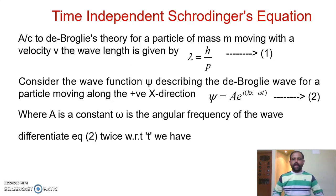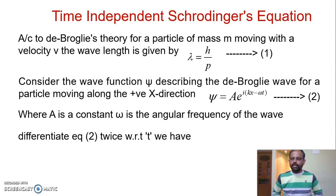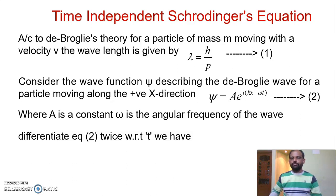Now we have to differentiate equation two with respect to time. Differentiating once, we get d(psi)/dt equal to A times e to the power of i(kx − ωt) multiplied by (−iω), since we differentiate the exponential with respect to the t term.